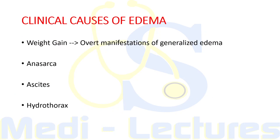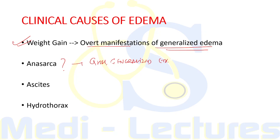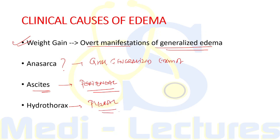Now moving to the causes of edema — a weight gain of several kilograms usually precedes overt manifestations of generalized edema. Anasarca refers to gross generalized edema. Ascites is the accumulation of excess fluid in the peritoneal cavity, and hydrothorax is accumulation of excess fluid in the pleural cavity. Patients may complain of increased ring tightness on fingers, difficulty putting on shoes especially in the evening, or facial puffiness — these points must not be ignored and should be recorded in history.